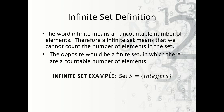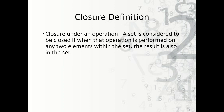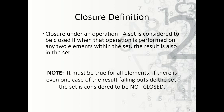An example of an infinite set would be the set of integers — there's no limit to the number of integers we can count. Now, closure definition: closure under an operation means a set is considered to be closed if, when that operation is performed on any two elements within the set, the result is also in the set. This must be true for all elements in the set — if there is even one case where the result falls outside the set, then it is considered to be not closed.